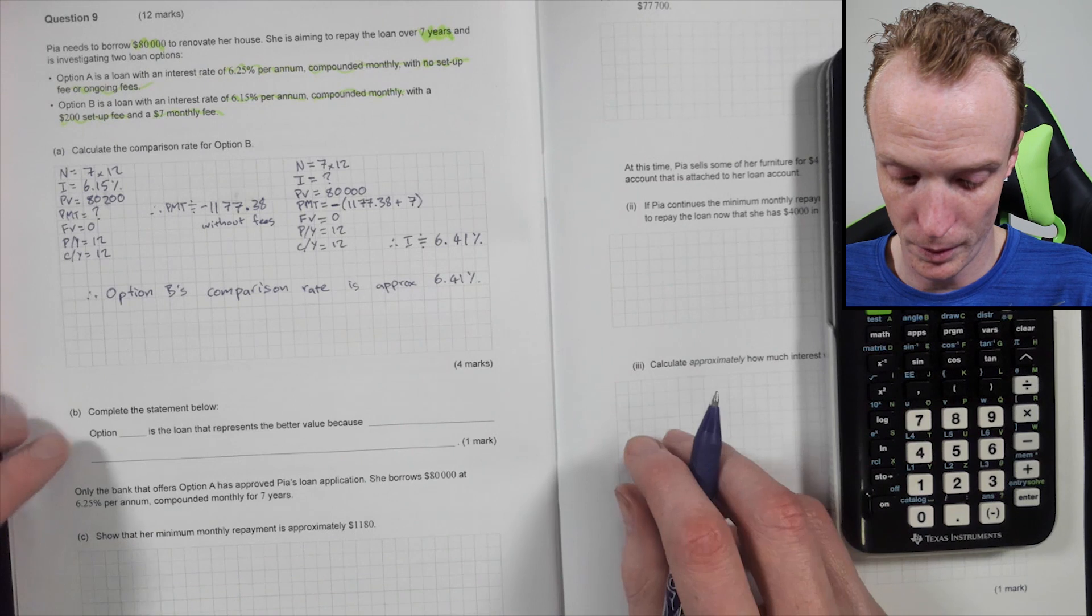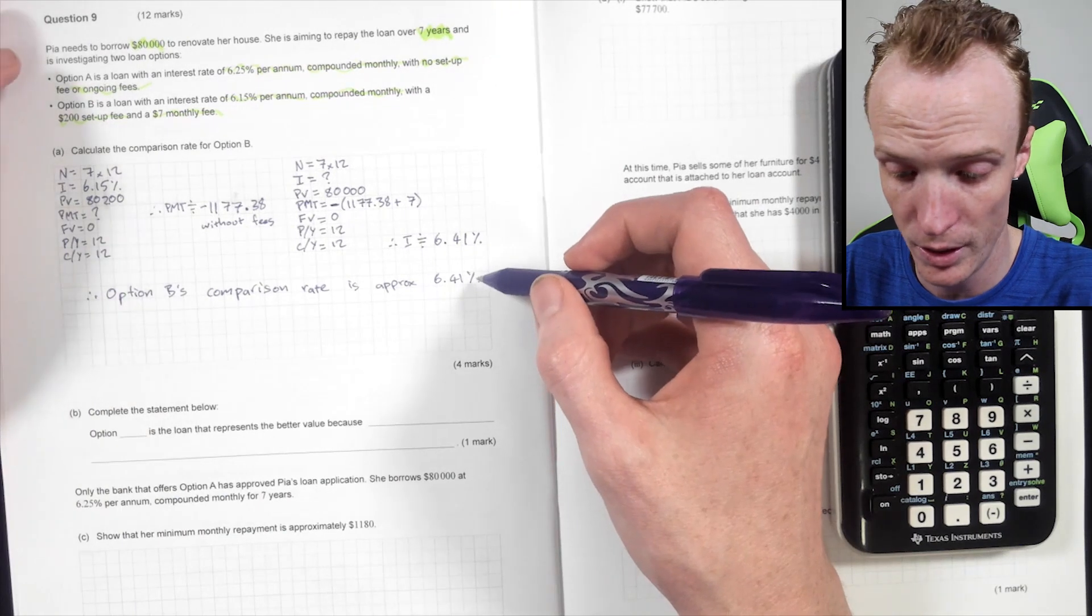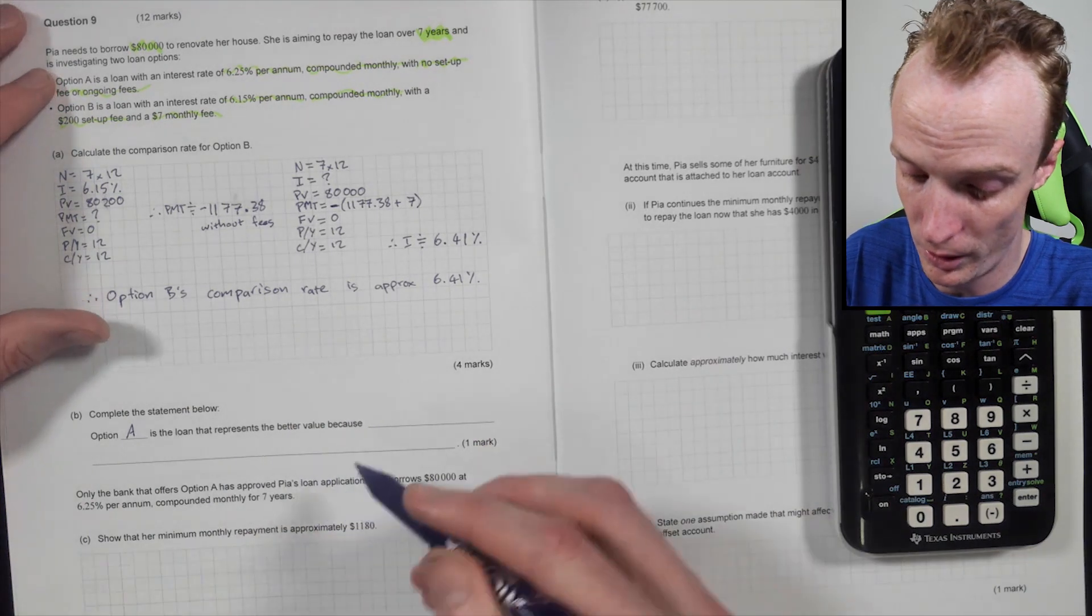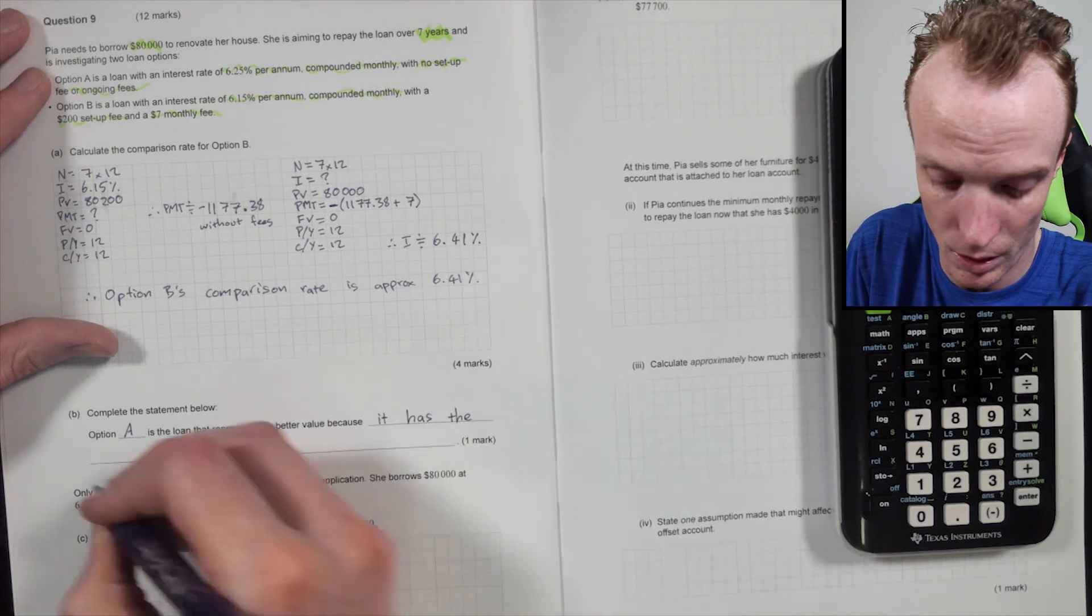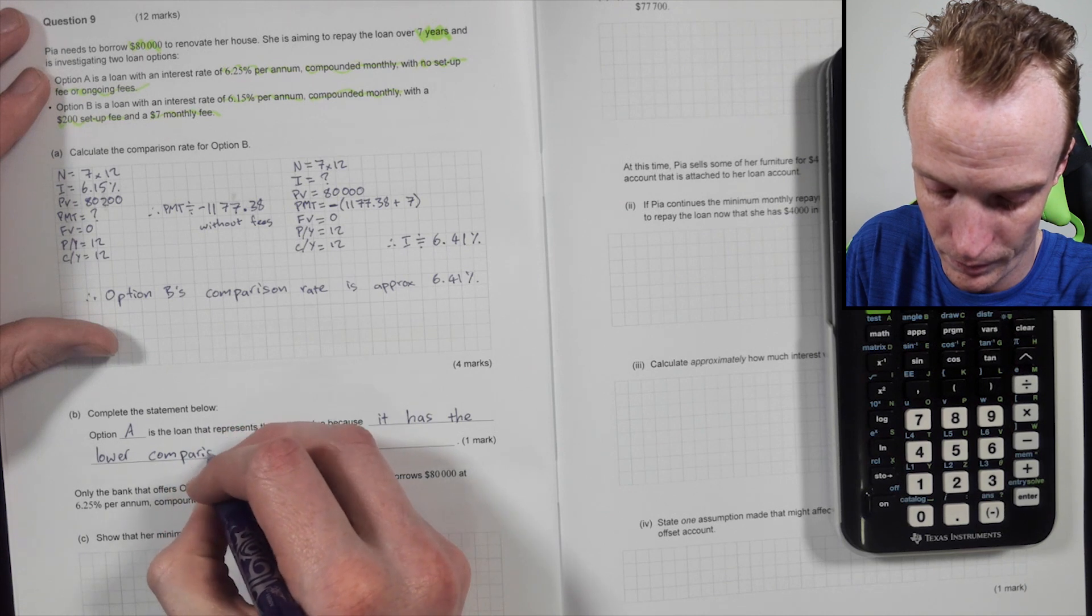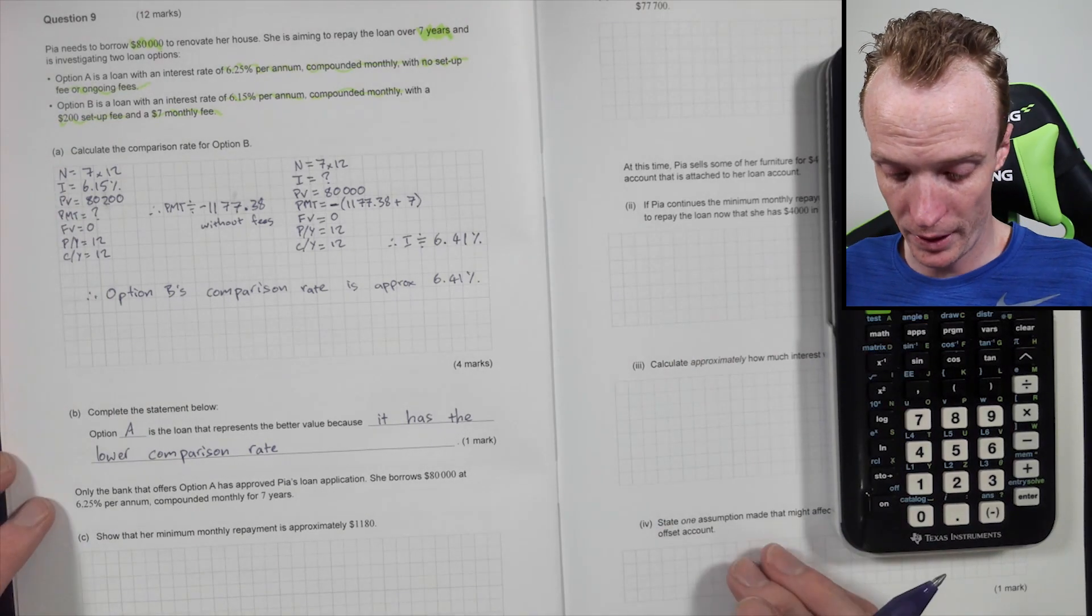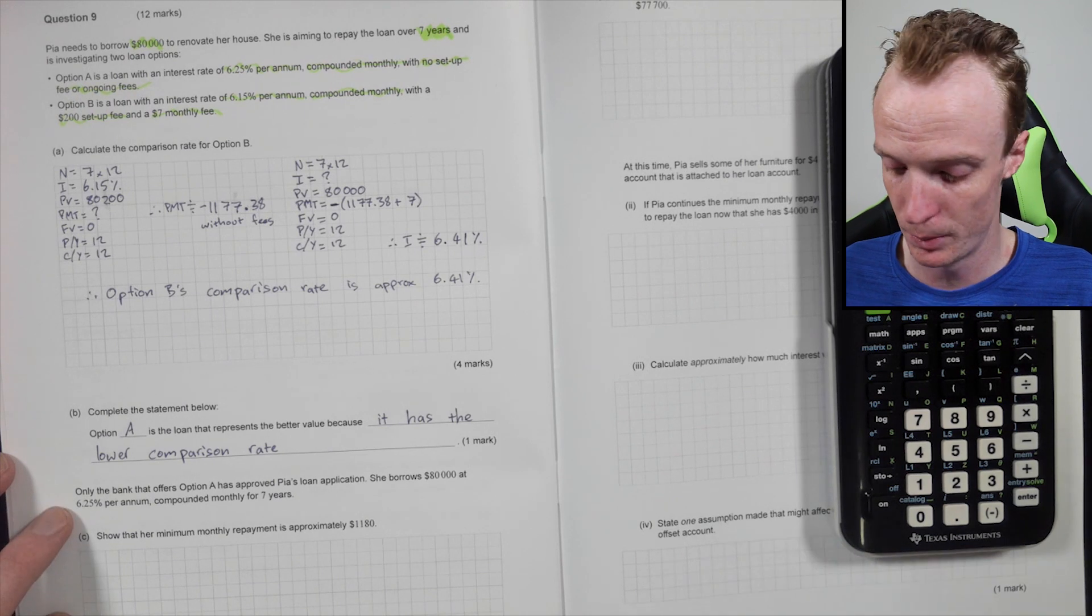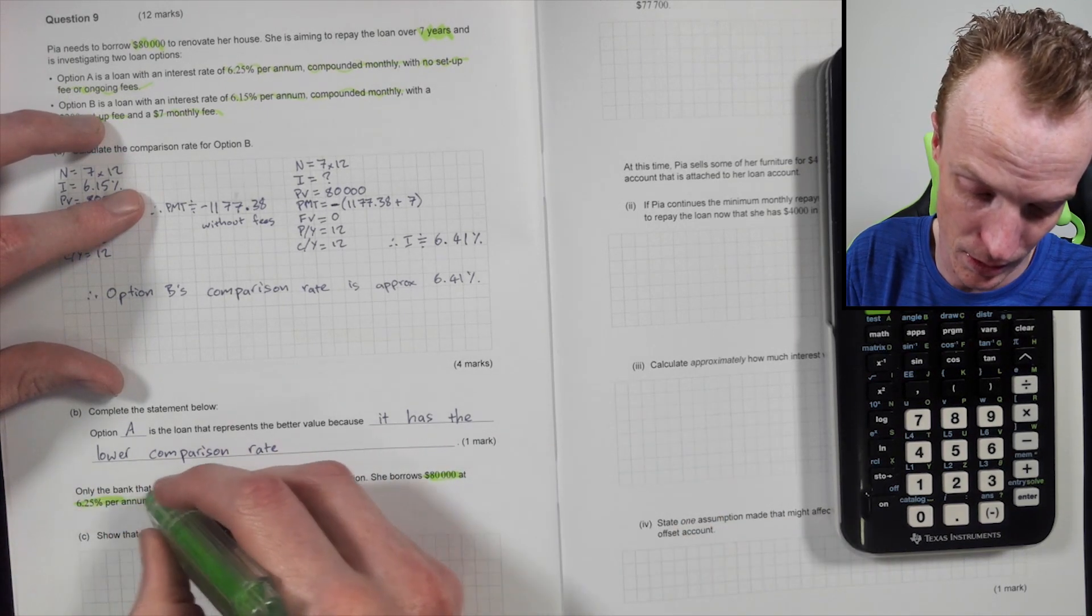Alright. Complete the statement below. Option something is the loan that represents the better value because well, the better value will be those lower comparison, right? So it'll be option A. So option A offers the better value because it has the lower comparison rate. Alright. So only the bank that offers option A has approved Pia's loan application. She borrows $80,000 at 6.25 per annum compound monthly for seven years. So I'm going to re-highlight that so I know what I'm dealing with.